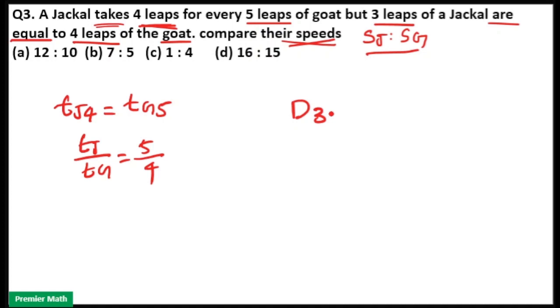So distance of 3 leaps of Jackal is equal to distance of 4 leaps of goat. So here distance of Jackal is to distance of goat is equal to 4 by 3.